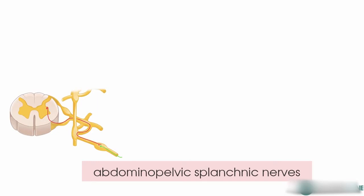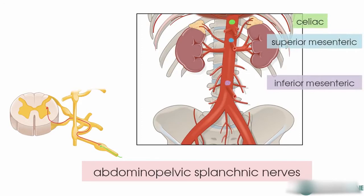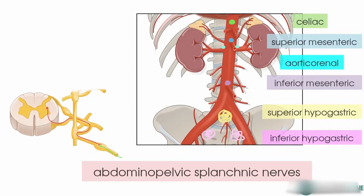They project to ganglia which are located in front of the vertebra, around the various branches of the aorta. You've got the celiac ganglia, the superior and inferior mesenteric ganglia, the aorticorenal ganglia, and the superior and inferior hypogastric ganglia. You'll also hear these referred to as plexuses.